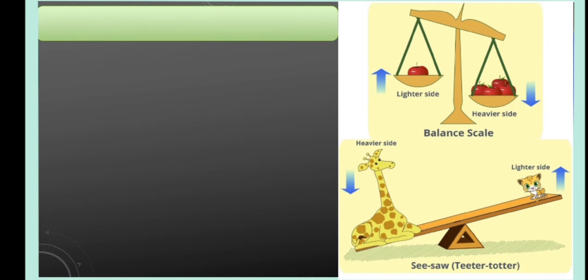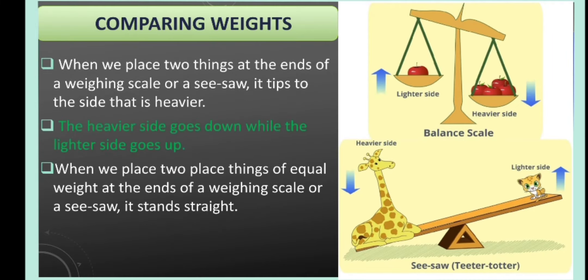Now let's look at the picture very well. When we place two objects, one at the left side and the other at the right side of a weighing scale or a see-saw, you notice the lighter object goes up while the heavier object pulls the weighing scale down. You can try it on a see-saw or a weighing scale. You'll notice this.